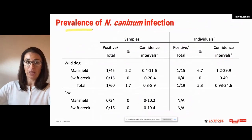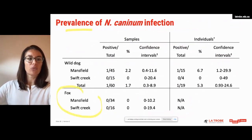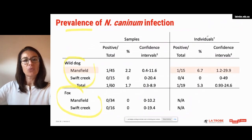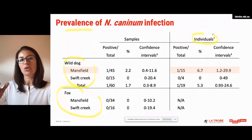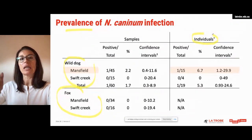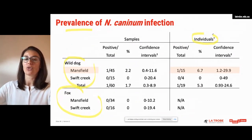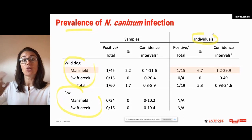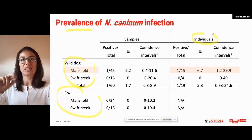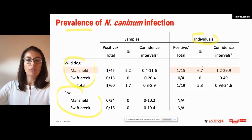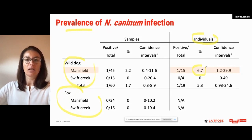With that confirmed, we were able to calculate the prevalence of N. caninum infections among the samples collected. Because we performed host analyses, we were able to calculate prevalence based on individuals rather than number of samples — since we had collected samples belonging to the same individuals, it is much more accurate to look at different individuals. We were able to calculate that 60.7% of wild dogs were actively shedding N. caninum oocysts at the Mansfield site at the time of collection.